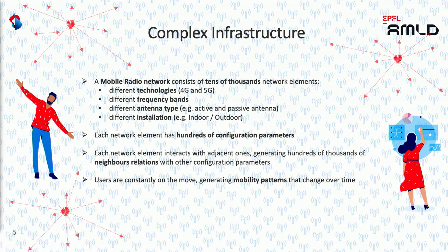In Swisscom we have up to 8 layers in frequencies. A cell can have different kinds of antenna types — in the past we had the standard passive antenna, but with 5G we introduced the active antenna. Finally, a cell can also have different installation types, for example indoor cells and outdoor cells.